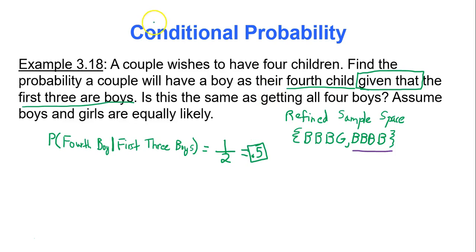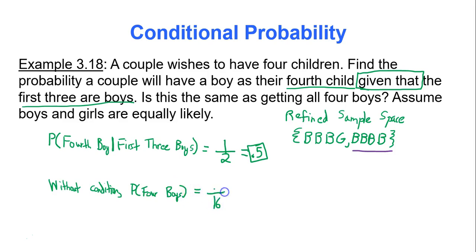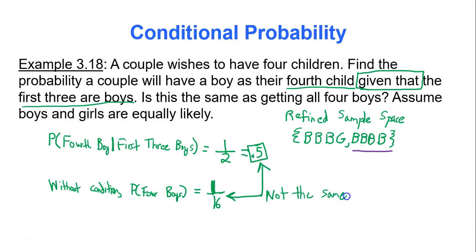How does this compare to getting all four boys without any condition? Without the condition, there are 16 total outcomes — two times two times two times two — and only one of those gives you all four boys, so that would be 1 out of 16. Clearly the two probabilities are not the same — that condition does make a difference, which is why we have conditional probabilities.